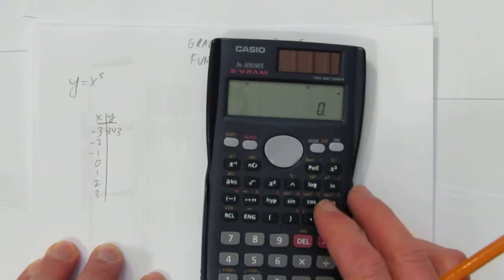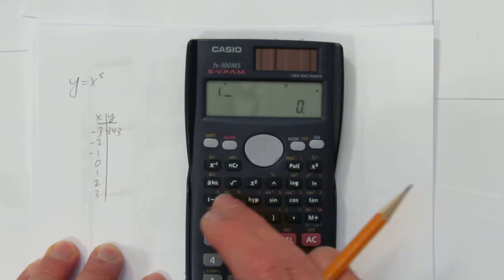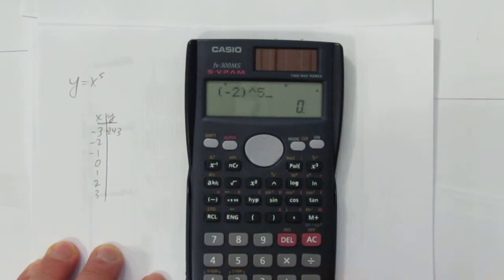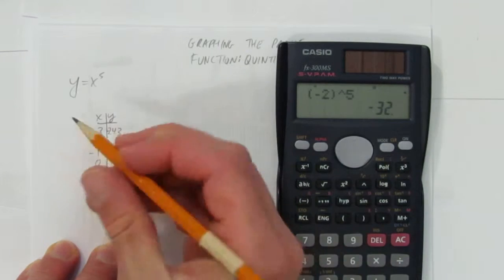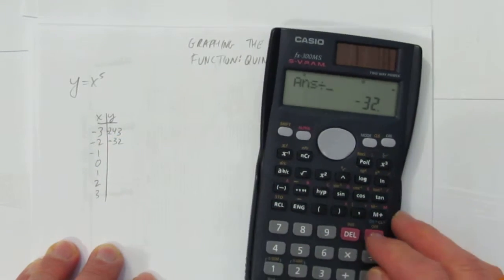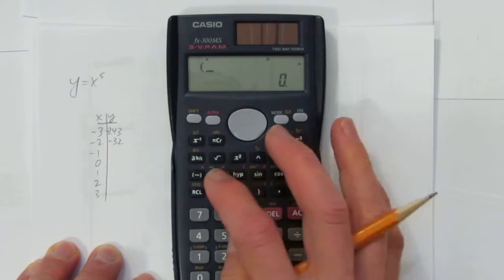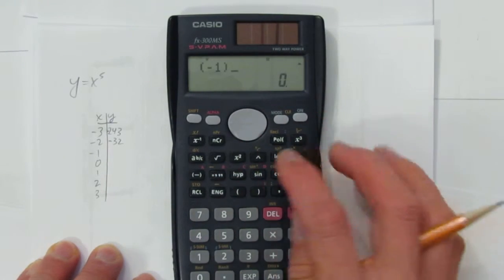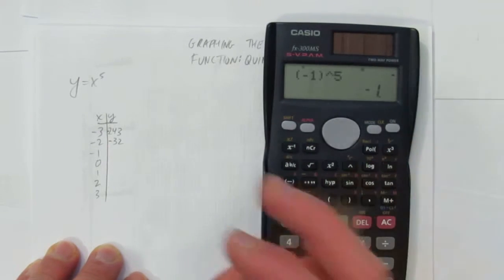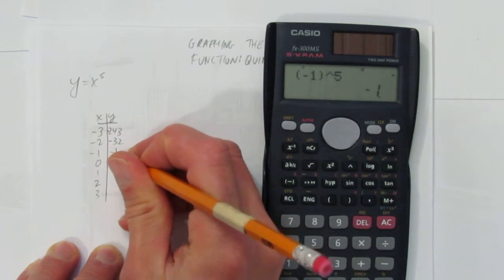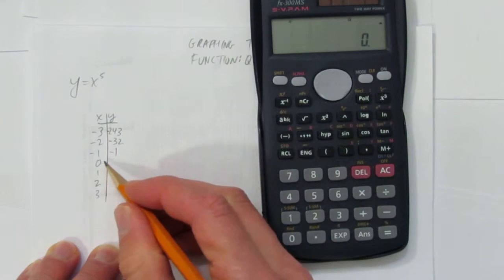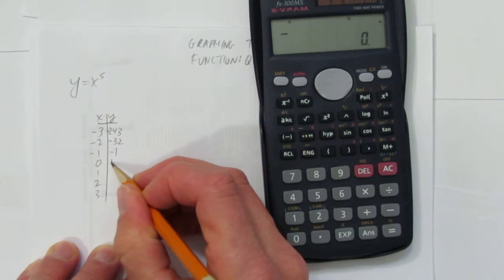The same is going to be true for negative 2. What's negative 2 to the power of 5? We get negative 32. What's negative 1 to the power of 5? Five negatives — four cancel out — but we're left with negative 1. It's just 1 times 1 times 1, with one negative left over. Zero to the power of 5 is just zero — zero times itself five times.